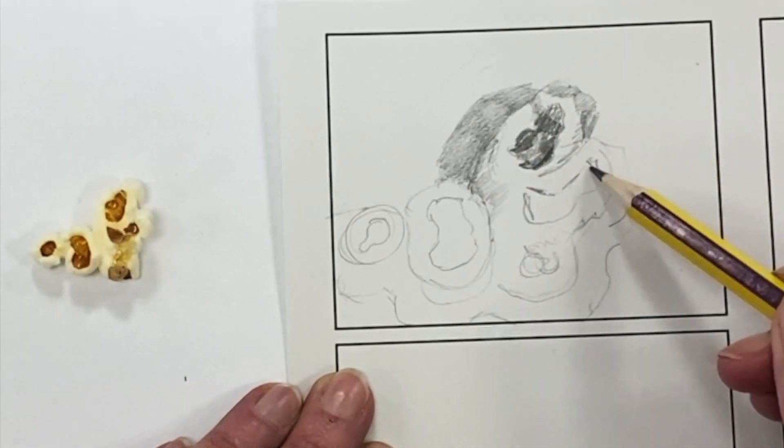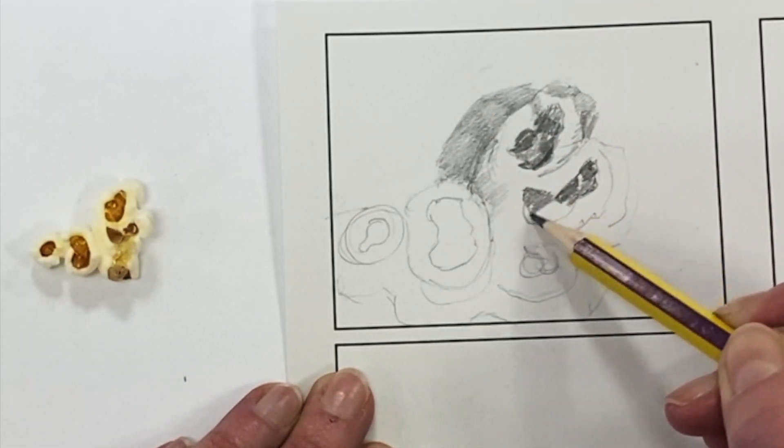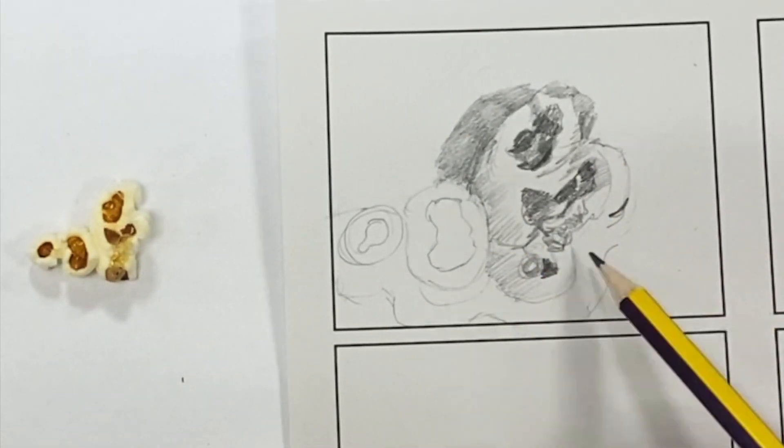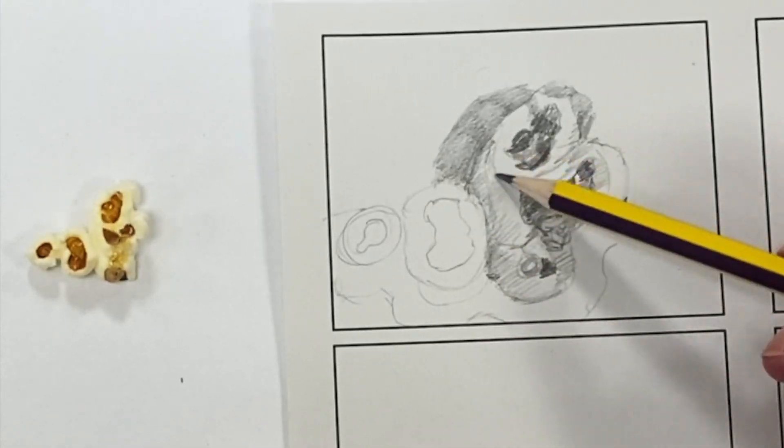So once I've done this, I'm going to use a variety of pencil pressure, pressing dark and light, to show a range of tone. I'm looking very carefully and putting the dark, medium, and light tones.